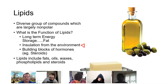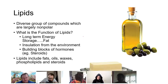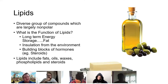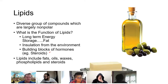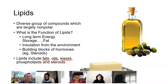Lipids are also important for insulation from the environment. Organisms with adipose tissue — fat tissue — use it for insulation. Walruses and seals have blubber to insulate them from cold environments. Lipid subunits can also be used to build up other molecules like steroids. Common lipid-related terms include fats, oils, waxes, phospholipids, and steroids. They're all hydrophobic because they have mostly non-polar covalent bonds.